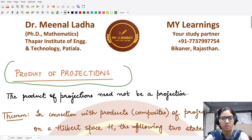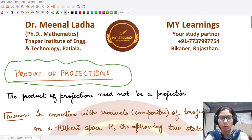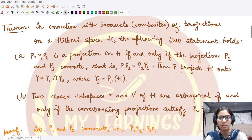Now in this video we shall look at the product of projections. Can we say that if we multiply two projections which are individually projections, is the product also a projection or not? The answer is that the product of projections may not be a projection. In fact, we have a theorem stating this.